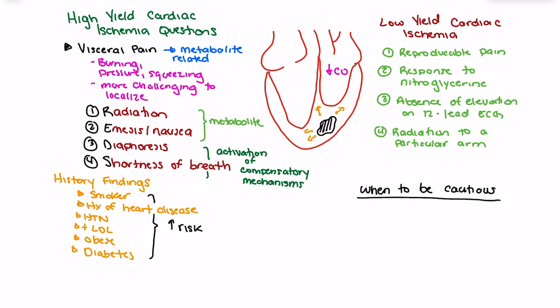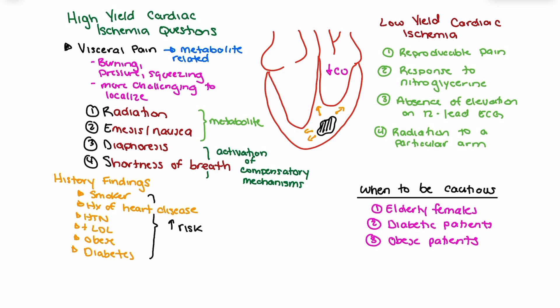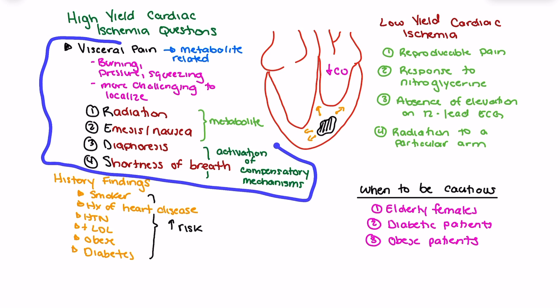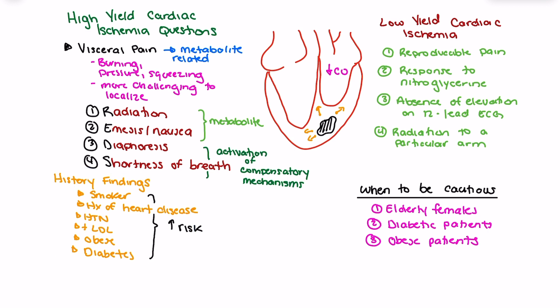We should be cautious with our assessments for certain patient types who present atypically. These include elderly females, diabetic patients, and obese patients. A high number of these patients presented with symptoms other than the typical high yield findings, yet had significant risk factors and were ultimately confirmed to have cardiac ischemia. These patients may only present with some core findings of ischemia but have contextual factors placing them at higher risk of atypical presentation. For these subtypes, base decisions on working diagnosis and risk: what else could it be, and how many risk factors do they have?